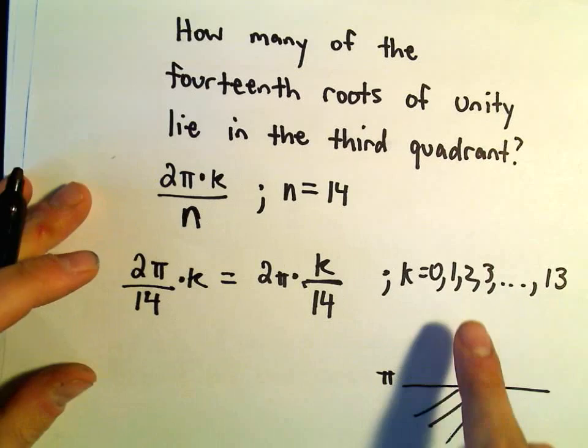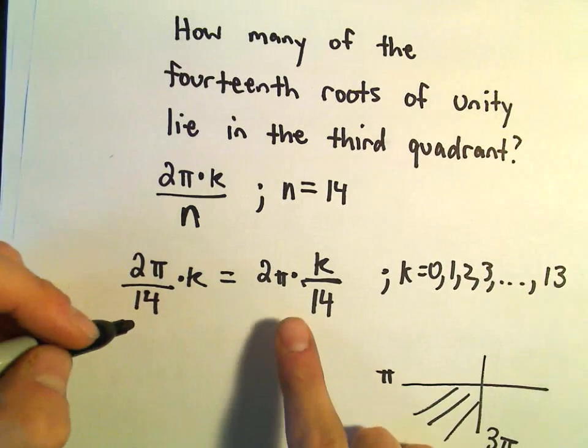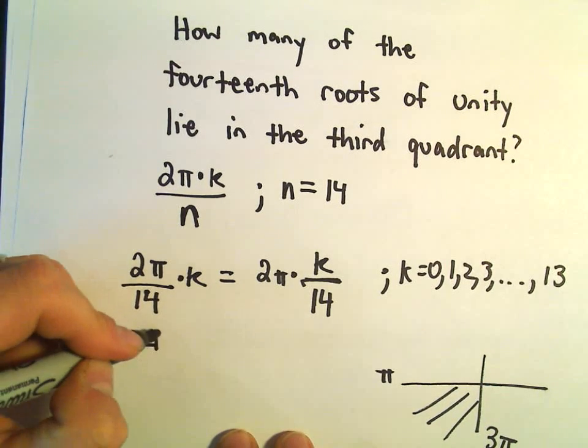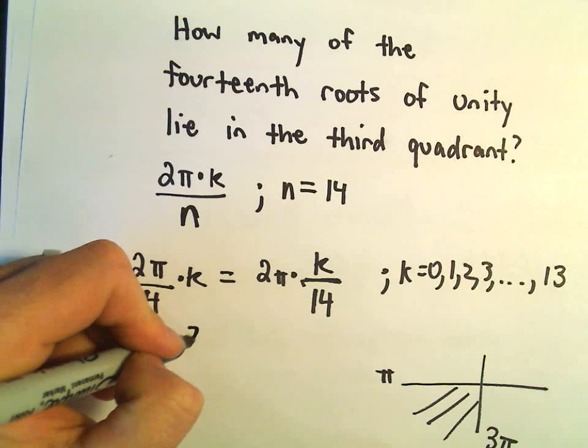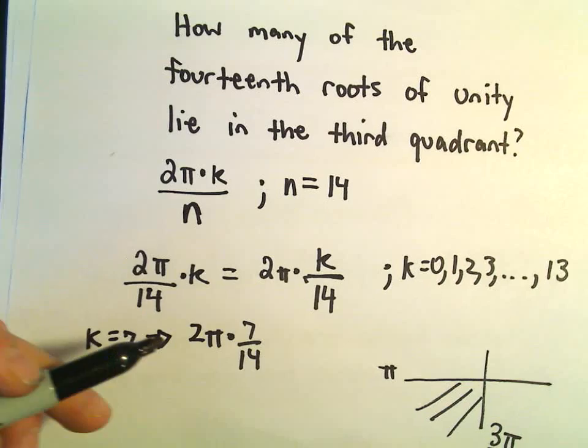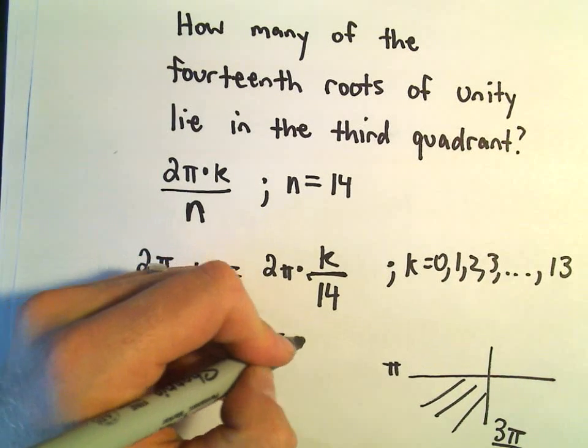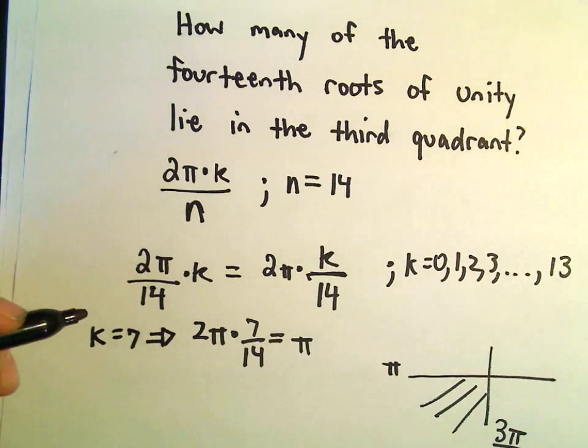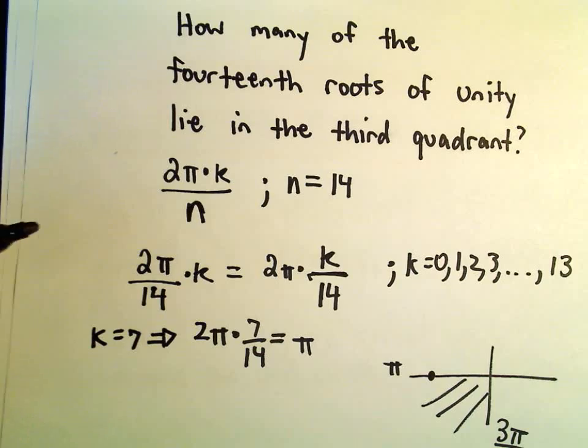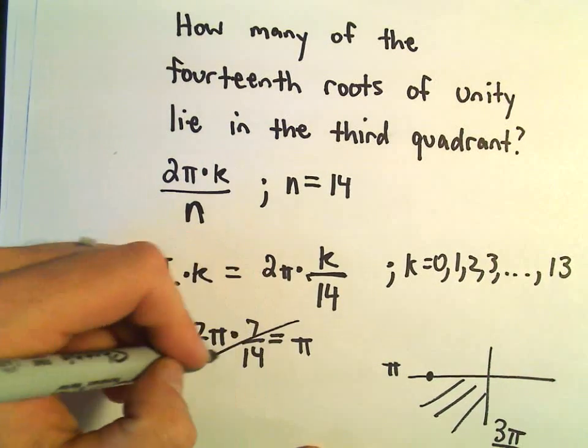You can really just start brute force checking them here. So notice if we let k equal exactly 7, we would get 2π times 7 over 14. Well, 7 over 14 is just 1 half. 1 half times 2π is just π. So the 7th root of unity would be lying over here on the negative x-axis, but it wouldn't quite be in quadrant 3 yet. So that one doesn't work.